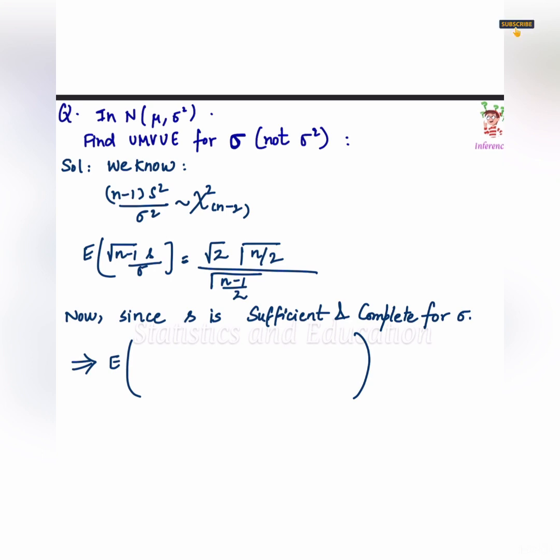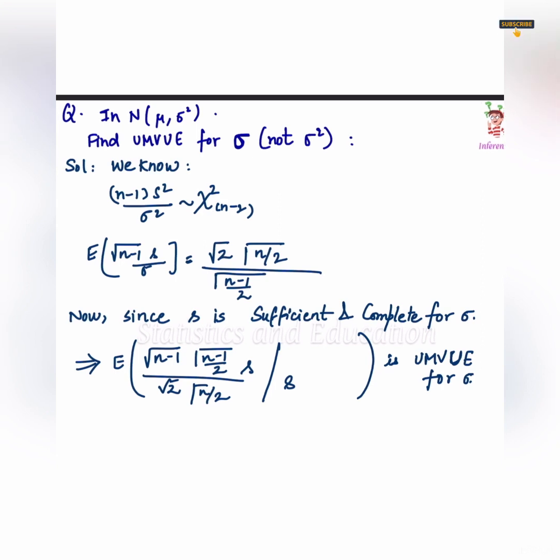It's not just complete for a parameter. It's complete for the entire distribution. So, whenever we talk about, let's say, uniform distribution, xn is complete for uniform distribution. It is not complete just for some theta. Okay, we already have expectation of square root n-1, s upon sigma. And we already know s is sufficient and complete. Now, we have only one unbiased estimator of sigma, which will be conditioned upon s.